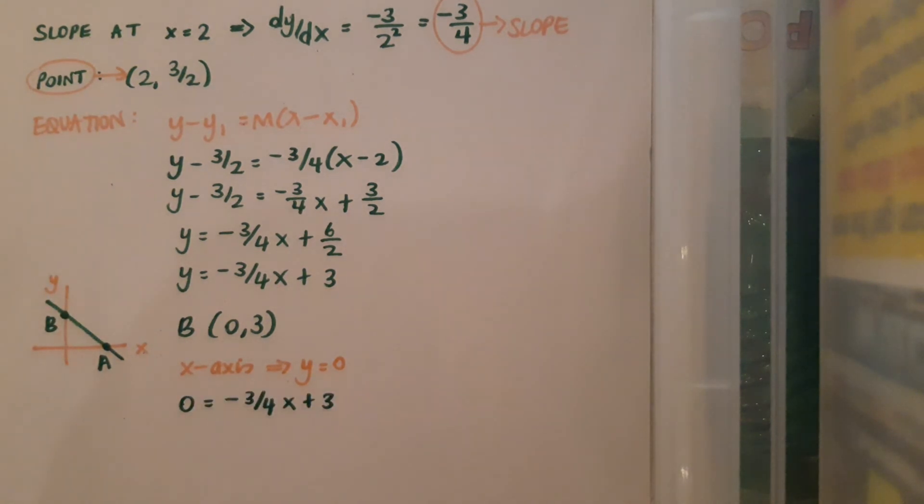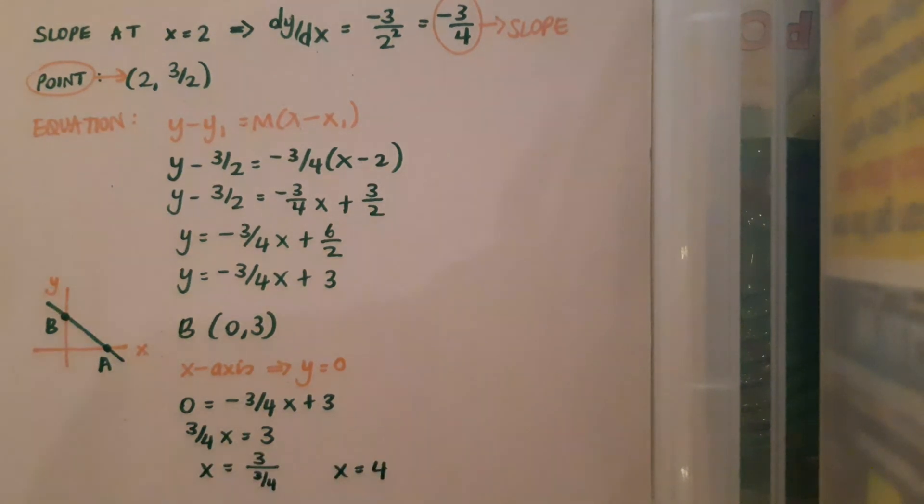So here's my equation with the 0 subbed in, and 3 quarters of x is 3, and my x value comes out as 4, so then I can make the point A. A is the point (4, 0).